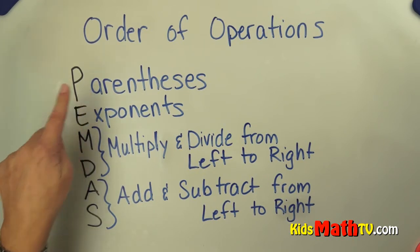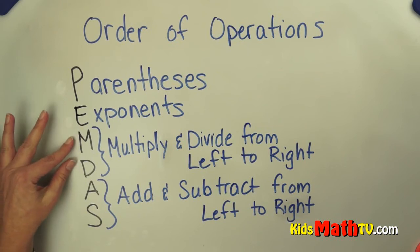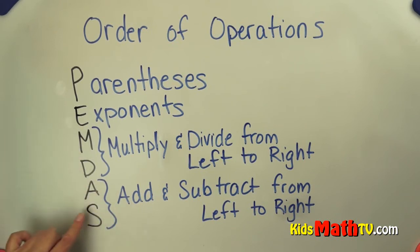So you remember P is for parentheses, E is for exponents, M multiplication, D division. But those are together from left to right. A is for addition, S is for subtraction. And again those are together from left to right.